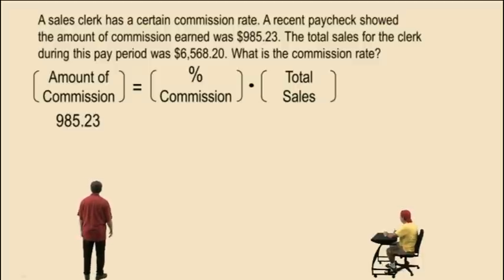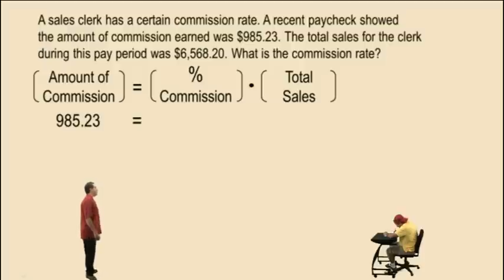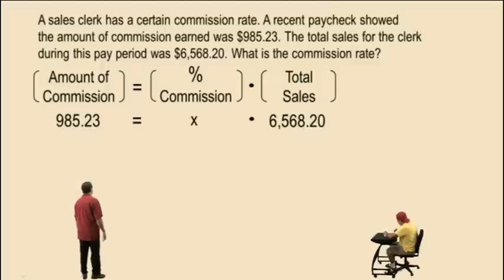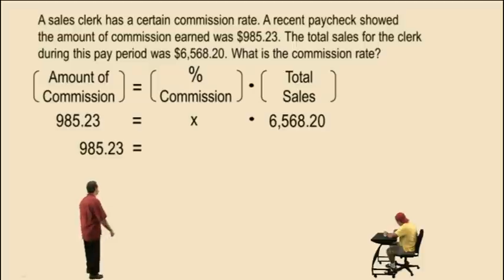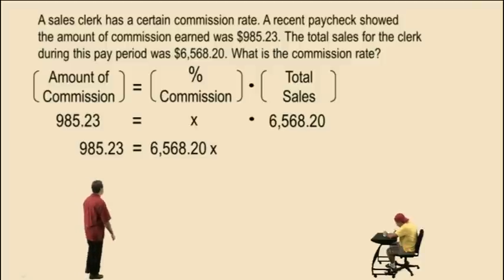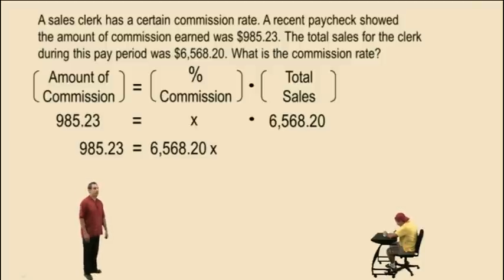Here's our equation. We are looking for the commission rate, or the percent commission. The amount of commission was given — that's $985.23. The percent commission is what we're looking for, so we represent that by x. The total sales is $6,568.20. So our equation is: $985.23 equals $6,568.20 times x.